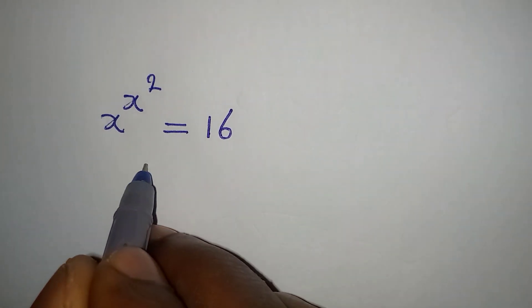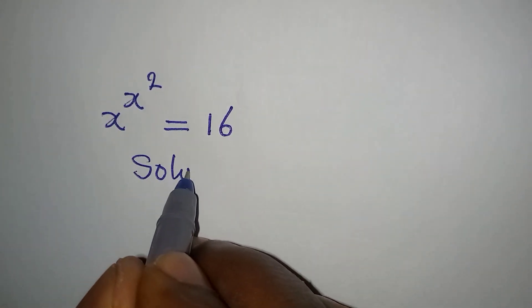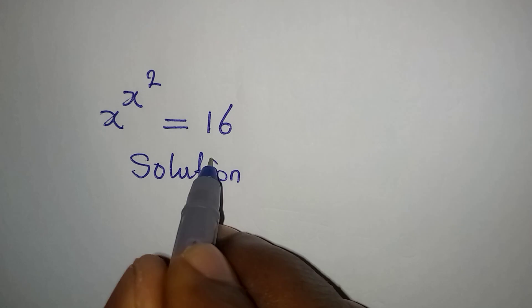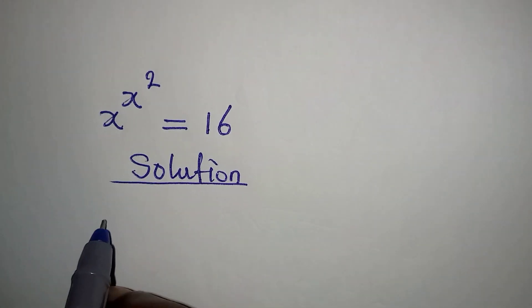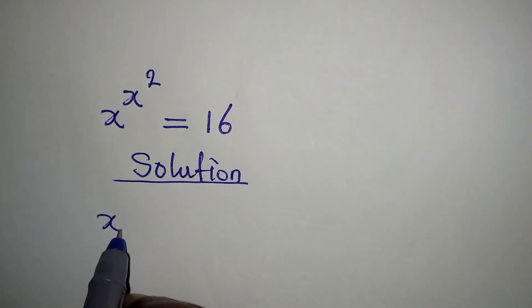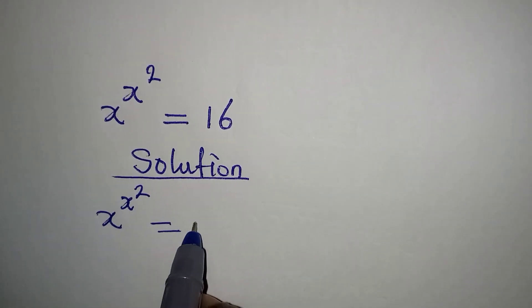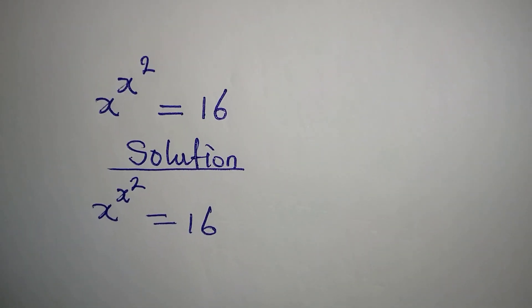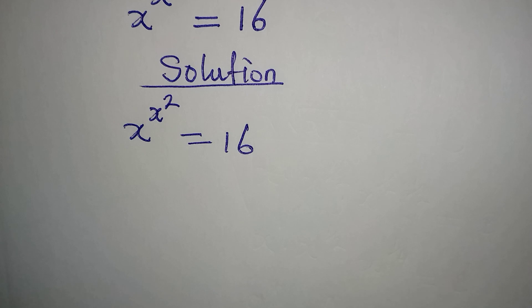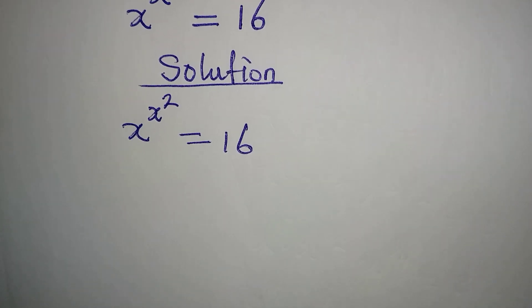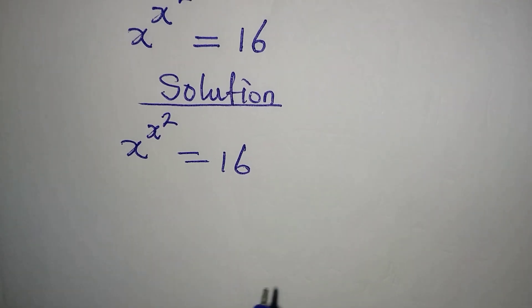Hello everyone, let's provide the solution to this problem. We have x to the power of x squared equal to 16. Now how do I deal with this? What I want to do is square both sides.